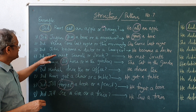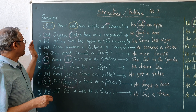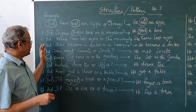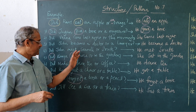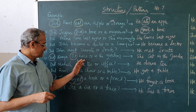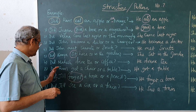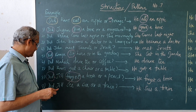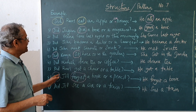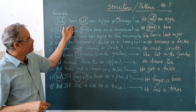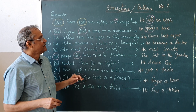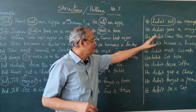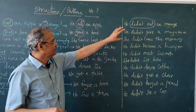So how to practice? Like this: Did Ravi eat an apple or an orange? Did Jagan give a book or a magazine? Did Veena come last night or this morning? Did John become a doctor or a lawyer? Did John meet Sasmita or Shruti? Did Kavya sit here or in the garden? Did Mahesh drink tea or coffee? Did Ravi get a chair or a table? Did Jill forget a book or a pencil? Did Jill see a car or a train? Like this with 'did' structure, you can bring in new names and new verbs and construct more sentences. For this question when you answer, you see how it becomes. Now focus on these two aspects — I will read, then you repeat.